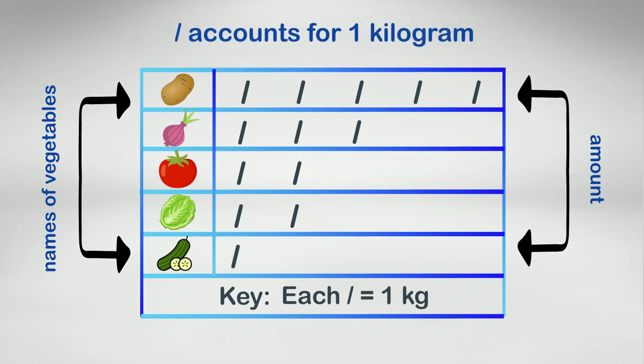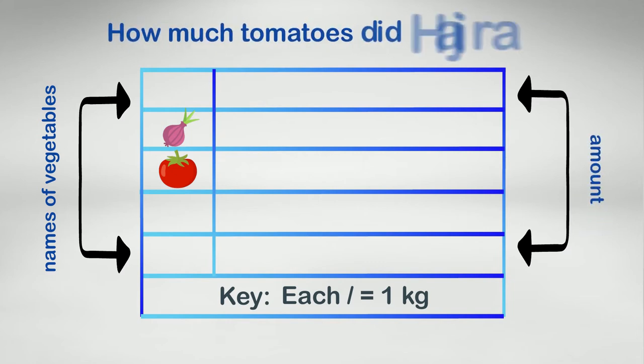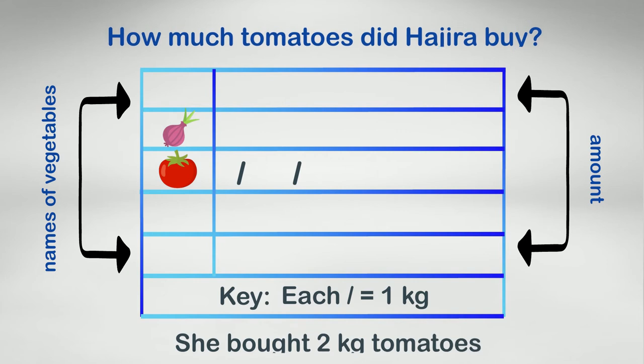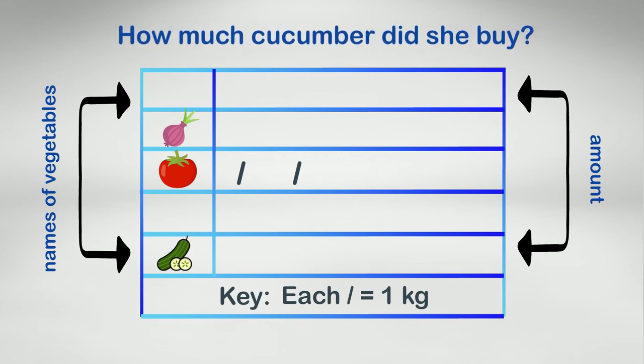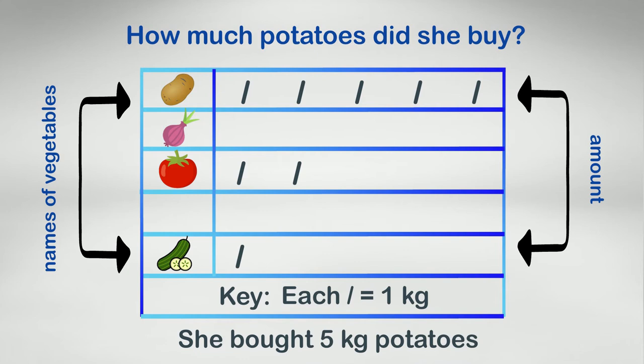Let's look at the graph and find out some answers. How much tomatoes did Hajra buy? One and two. She bought two kg tomatoes. How much cucumber did she buy? One. So she bought one kg cucumber. How much potatoes did she buy? One, two, three, four, five. She bought five kg potatoes.